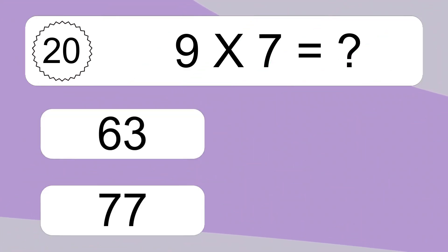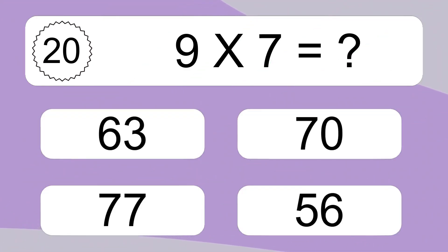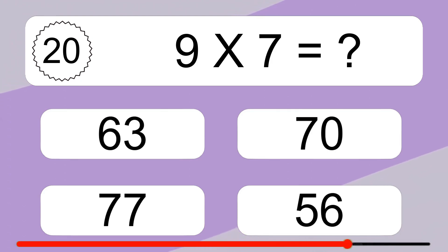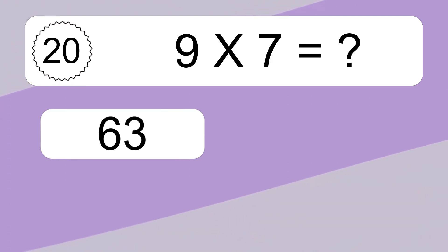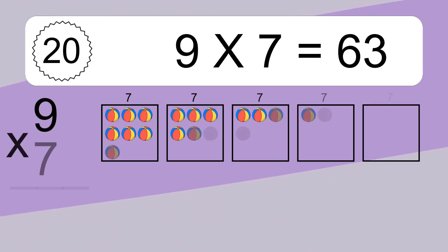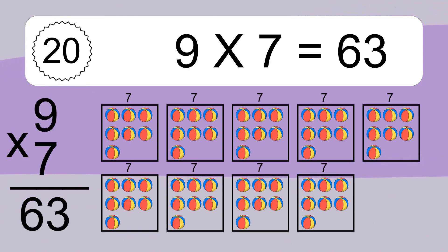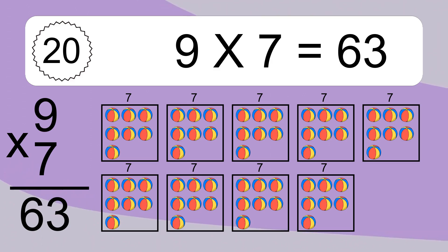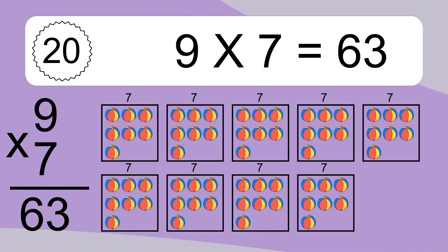9 times 7 equals what? 9 times 7 equals 63. We have 9 boxes, and each box has 7 colorful balls inside. If you count all the balls in all the boxes together, you will have 9 times 7 balls. This equals 63 balls.